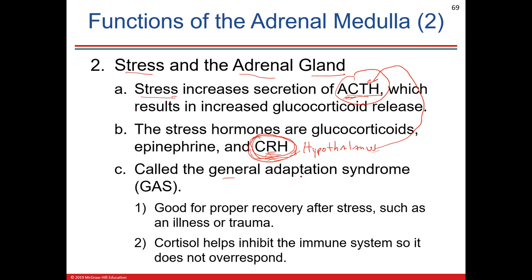The first thing released during stress and adaptation is norepinephrine or epinephrine as a neurotransmitter — a quick, lightning-fast response. Then cortisol is released through the CRH→ACTH→anterior pituitary→adrenal cortex pathway. Cortisol depresses or inhibits the immune system so it doesn't over-respond to the initial output, which would be inflammation — like having surgery that causes inflammation in your body.